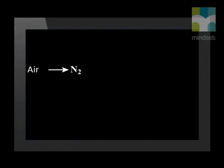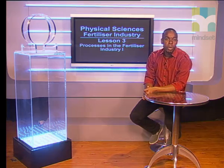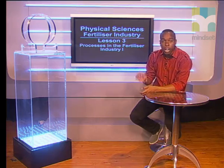So we learned that fractional distillation is used to extract nitrogen from the air. This nitrogen is then used to react with hydrogen gas to manufacture ammonia. This ammonia, as we shall see, is then used to produce most common fertilizers. We hope you see that there has to be a high yield of ammonia in order to meet the huge demand for fertilizers in the agricultural industry. We will learn more about the Haber process and some of the other processes used to make fertilizers in the second part of this lesson.